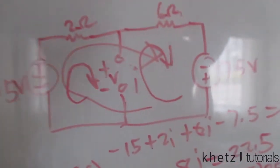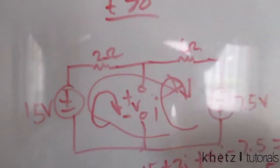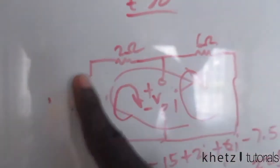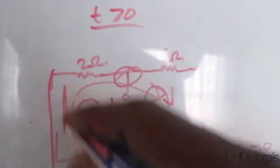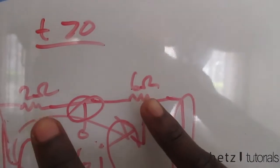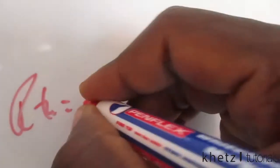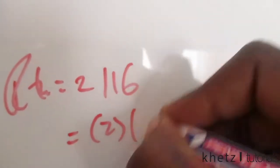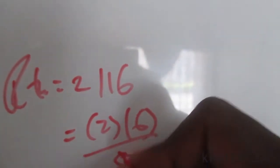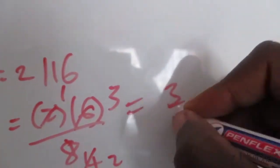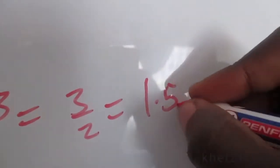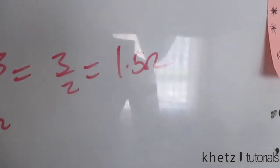Next we find Rth with respect to the storage element to determine the time constant. We remove all independent sources. The 2-ohm and 6-ohm resistors share both nodes, so they are in parallel. Rth = 2 parallel with 6 = (2 × 6) / (2 + 6) = 12/8 = 1.5 ohms.